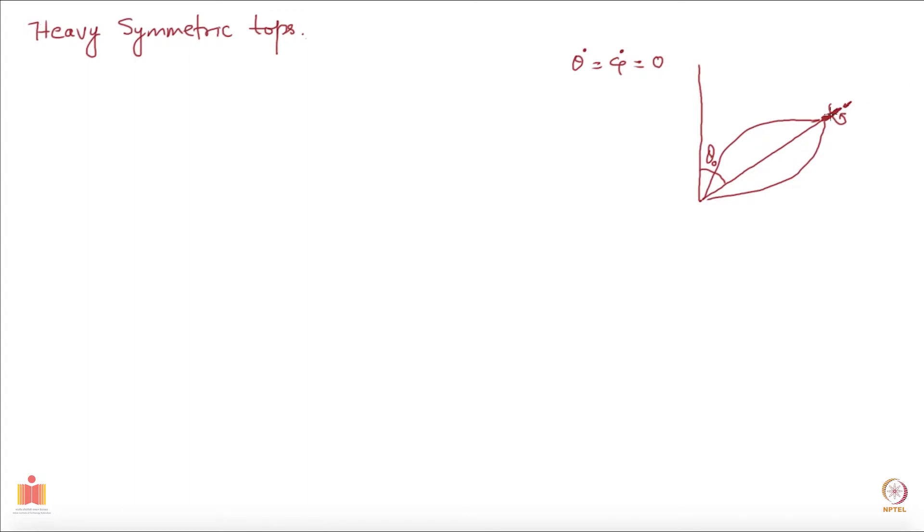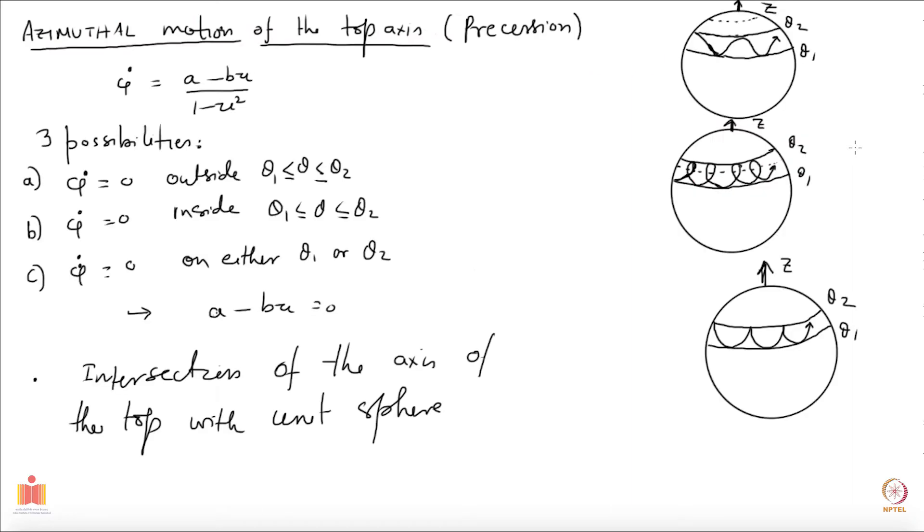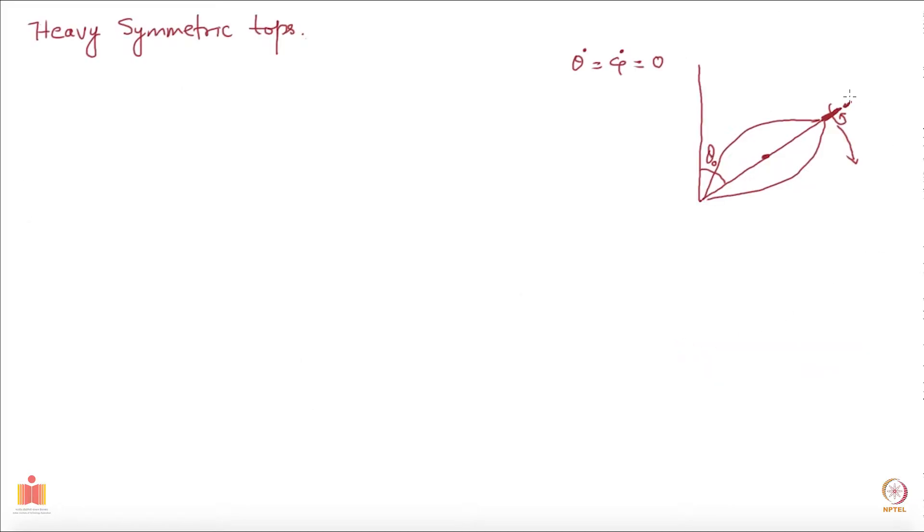Well, what happens is that it will immediately start dropping down. This will start falling, the top, meaning the theta will start increasing. You should convince yourself that it has to increase and not decrease because that will not be allowed by energy conservation. It falls down, comes down and then again goes up and then comes down, and that is what this possibility shows. This corresponds to this setup.